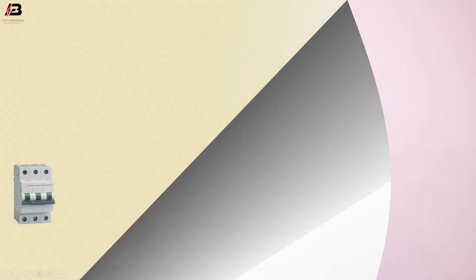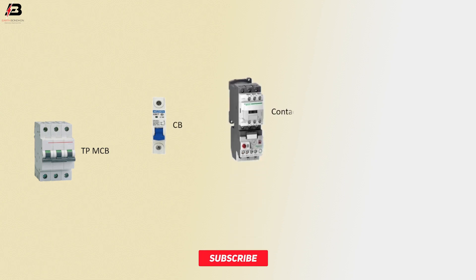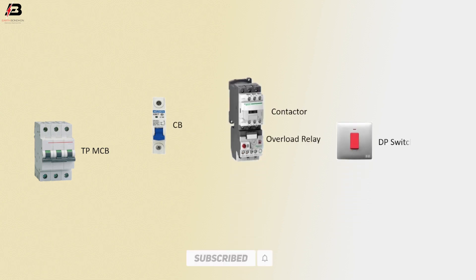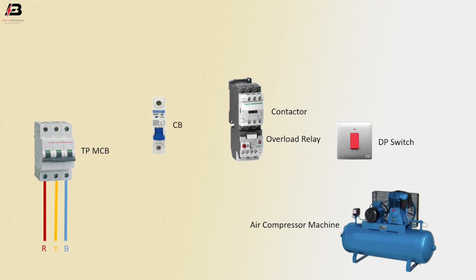So viewers, let's start. Components used: triple pole MCB, single pole circuit breaker, contactor, overload relay, double pole switch, and air compressor machine. R phase connection to TPMCB, Y phase connection to TPMCB, B phase connection to TPMCB — three phase connection.